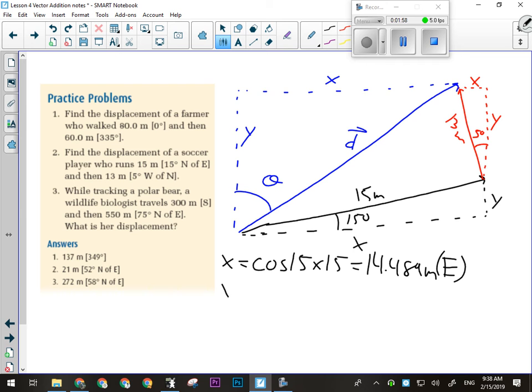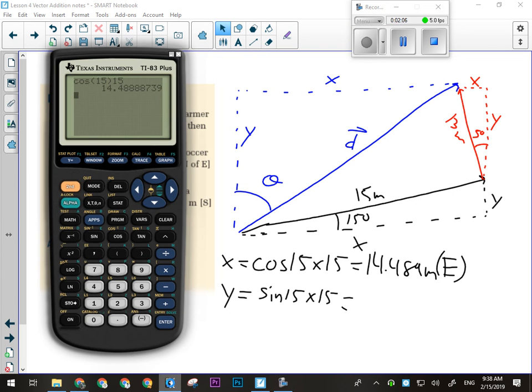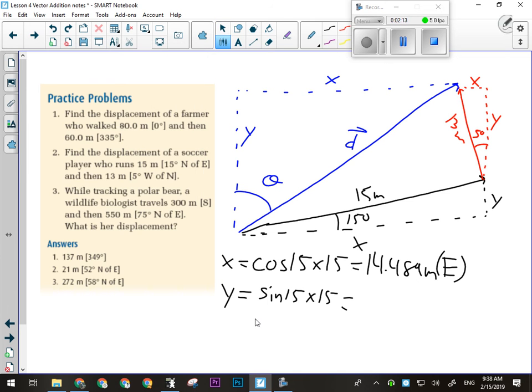All right, black y is the opposite side. So that's gonna be the sine of 15 degrees times 15. All right, so that side is 3.882 meters. And that is north. Everyone okay with what I'm doing so far?